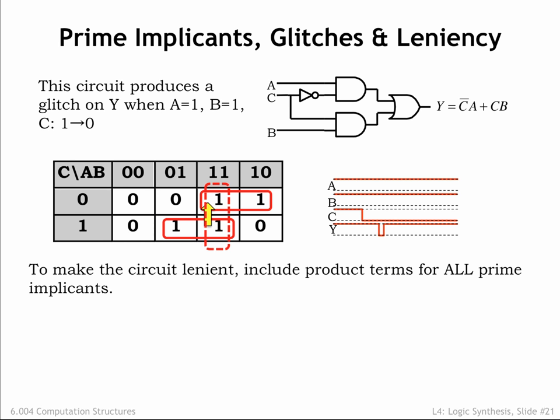It turns out there is a prime implicant that covers the cells involved in this transition, shown here with a dotted red outline. We didn't include it when building the original sum-of-products implementation since the other two product terms provided the necessary functionality.